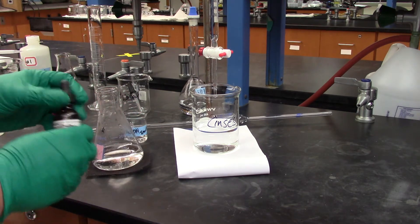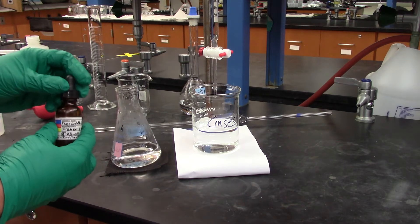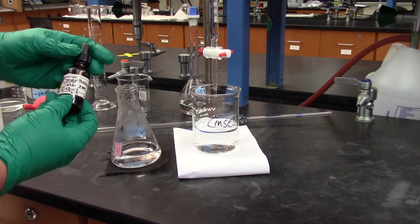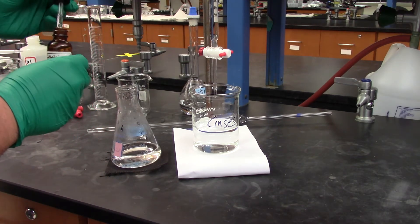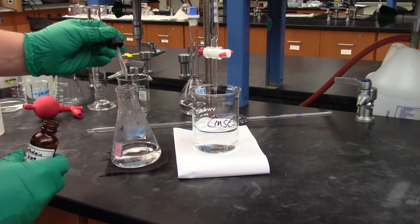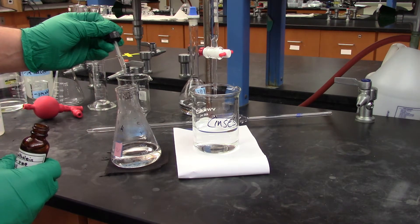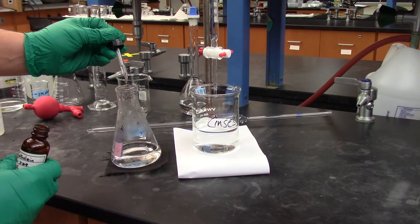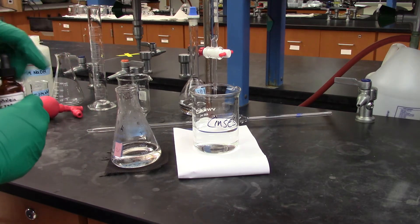Before we do this, you want to make sure the point of this is we have to put in our indicator, which is phenolphthalein, and the directions say three to five drops. So make sure to do that. Two, three, four, five. It's probably six, but that's fine.